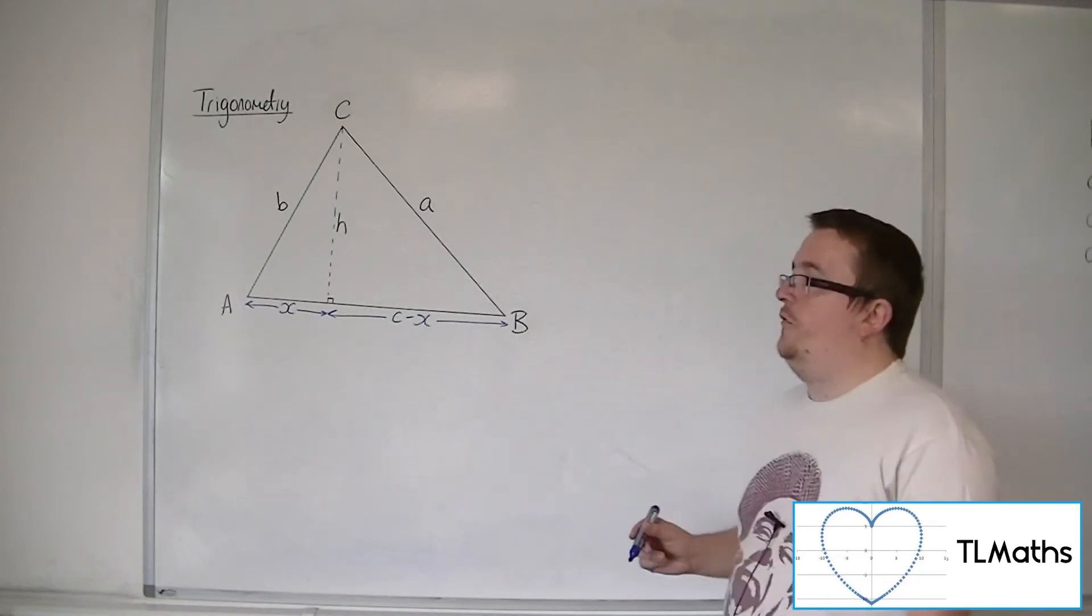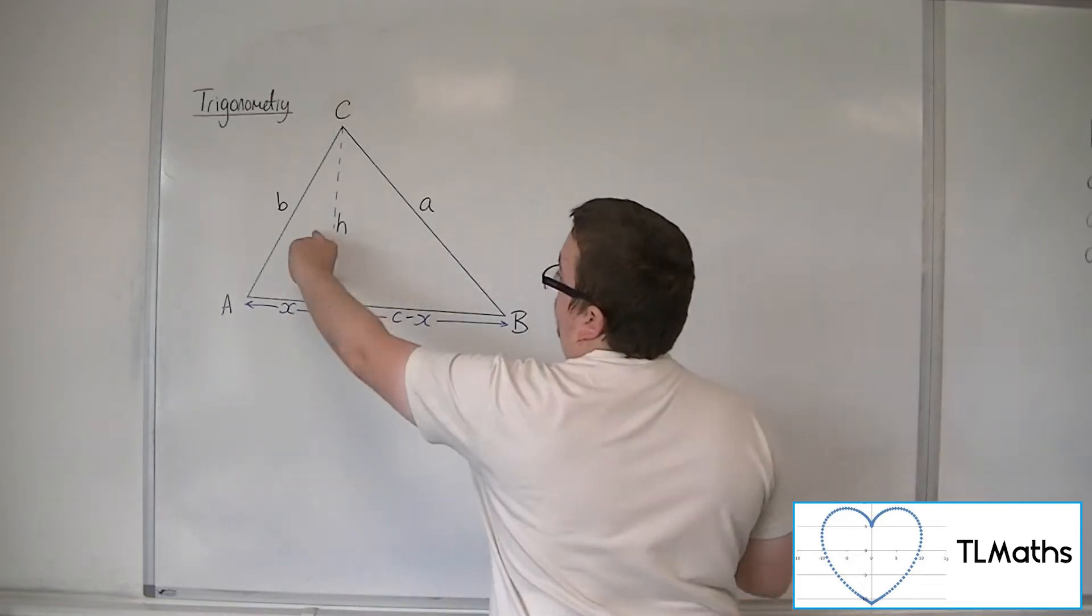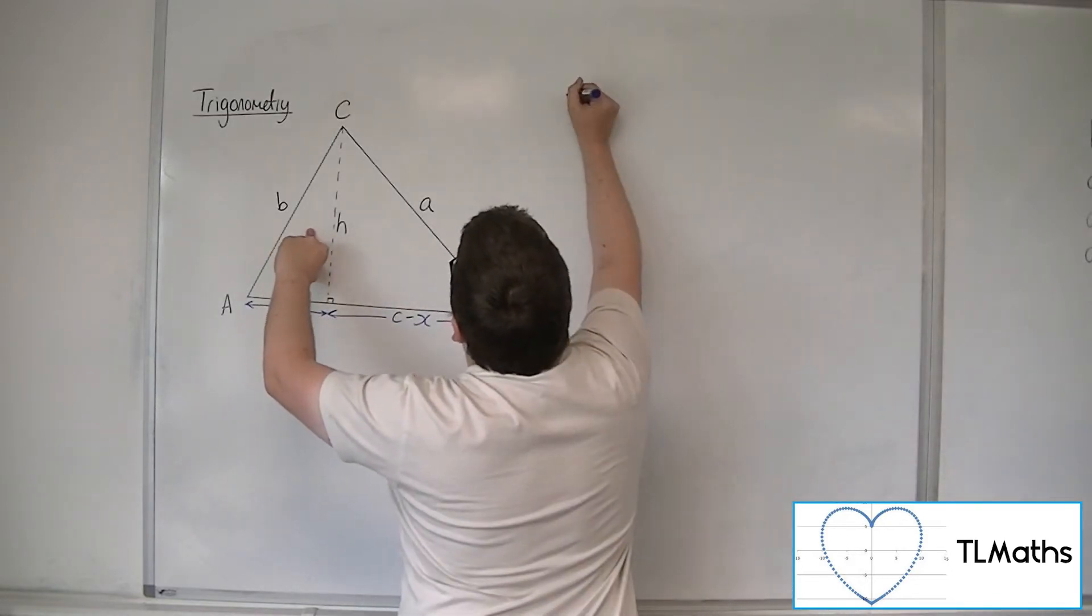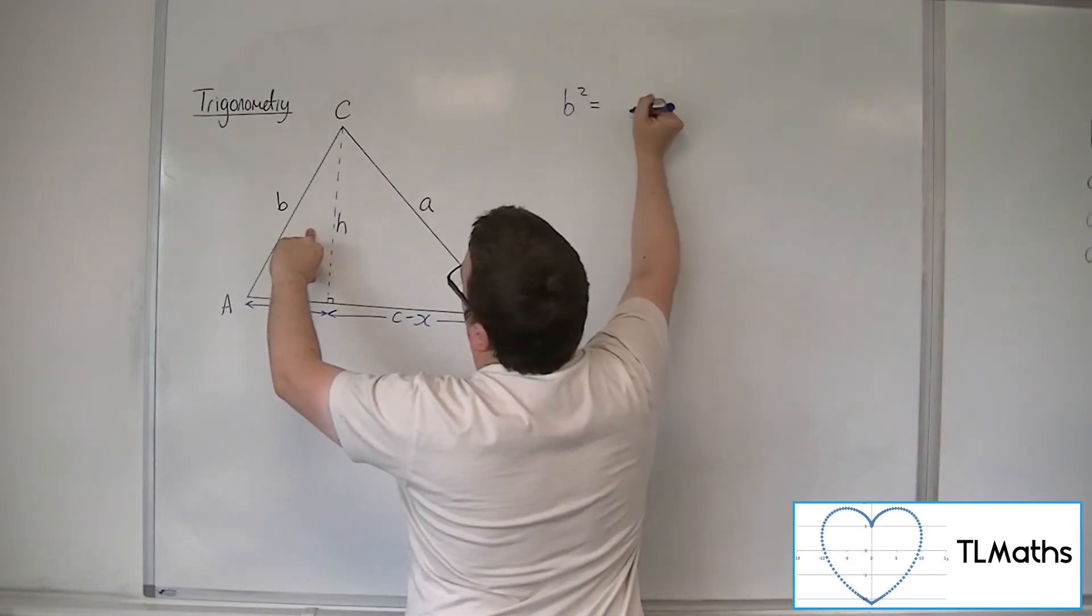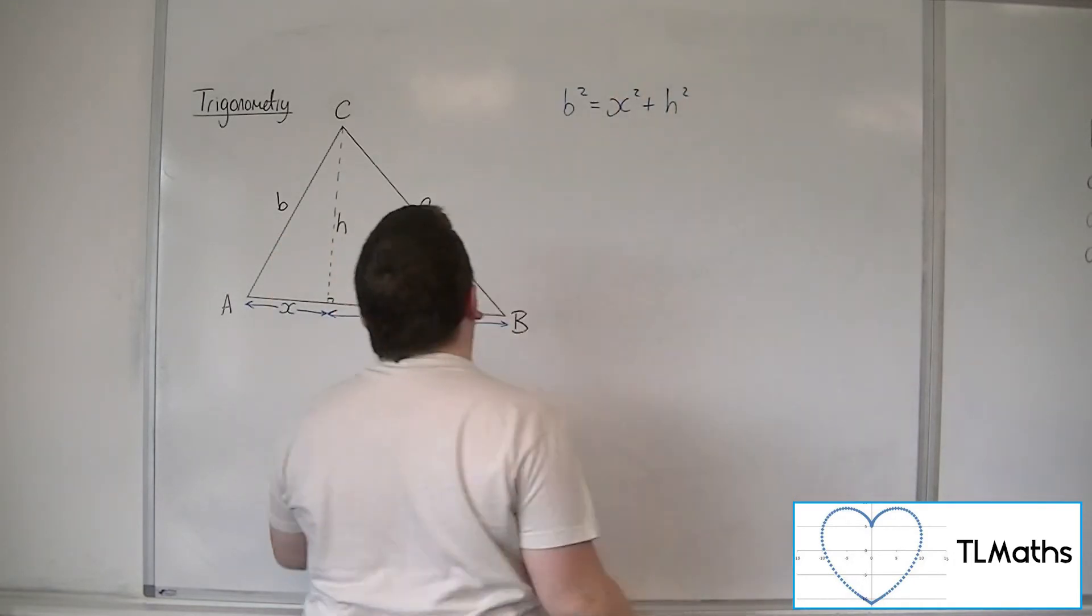So then if we utilize Pythagoras with this triangle, we can say that B squared must be equal to X squared plus H squared from that triangle there.